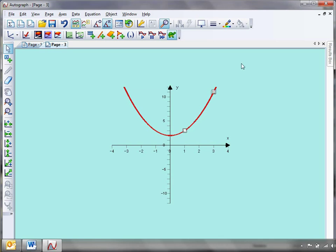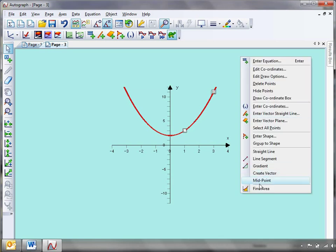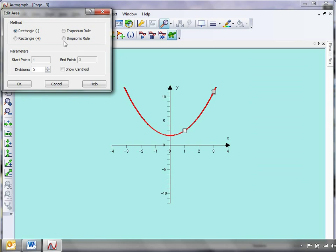You need to tell Autograph that you'd like to do the area between that point and that point. So I'm holding down shift to select both points. I right click and down there is find area. Now, we're going to use Simpson's rule again. It doesn't really matter about the number of divisions. I'm just going to pump it up to say number 10 and click OK.